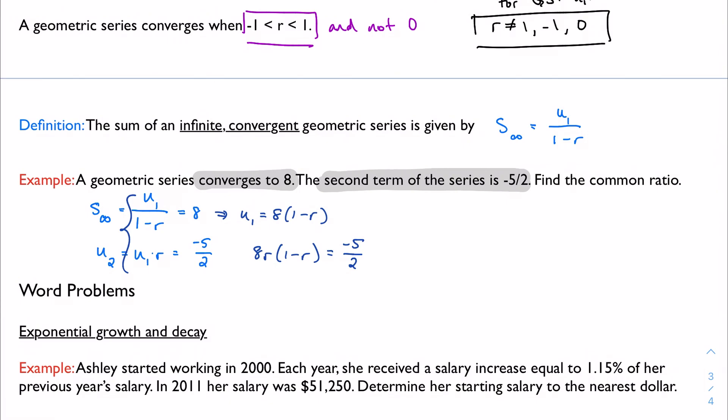So I have 8r(1 minus r) equals negative 5 over 2. And so I have, let's see here. Maybe I'll say r minus r² equals negative 5 over 16. I don't know if that makes it any nicer. Let's see here. And I move some things over: 5 plus 16r minus 16r². That's gross. I'm not going to try to factor this. I don't think this is going to be particularly pretty. I'm just going to take a sledgehammer to the problem. And I'm just going to jump to the quadratic formula.